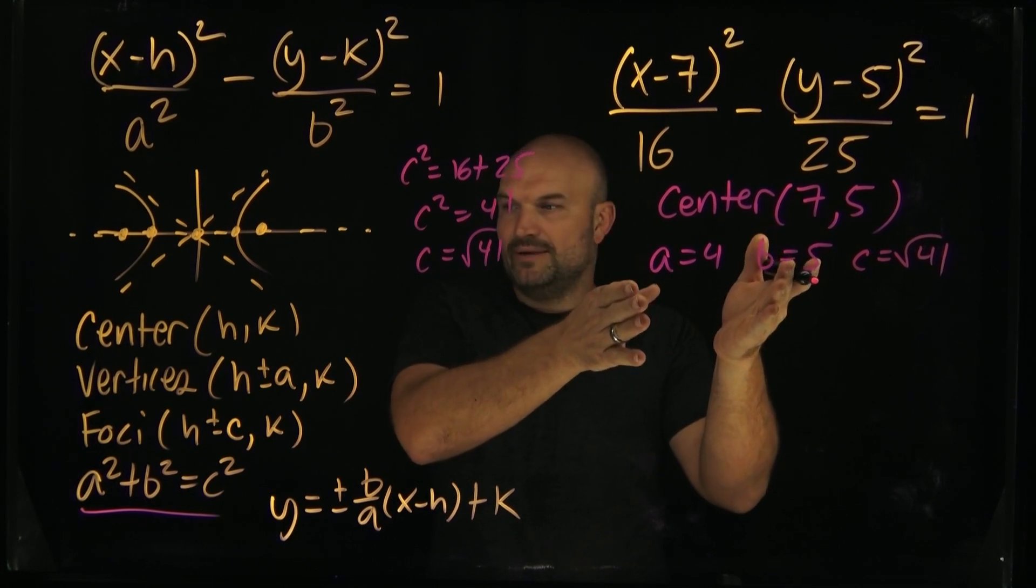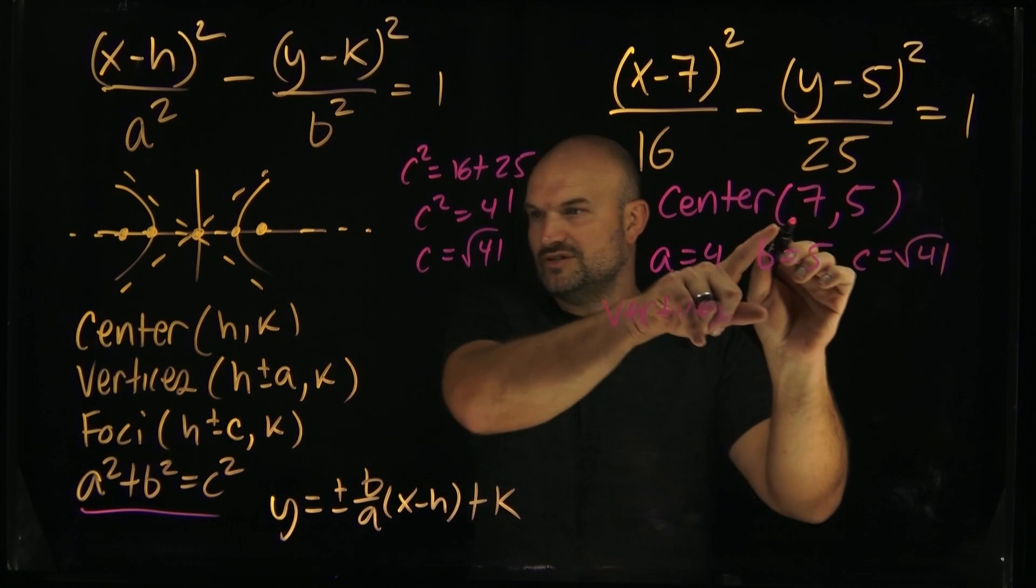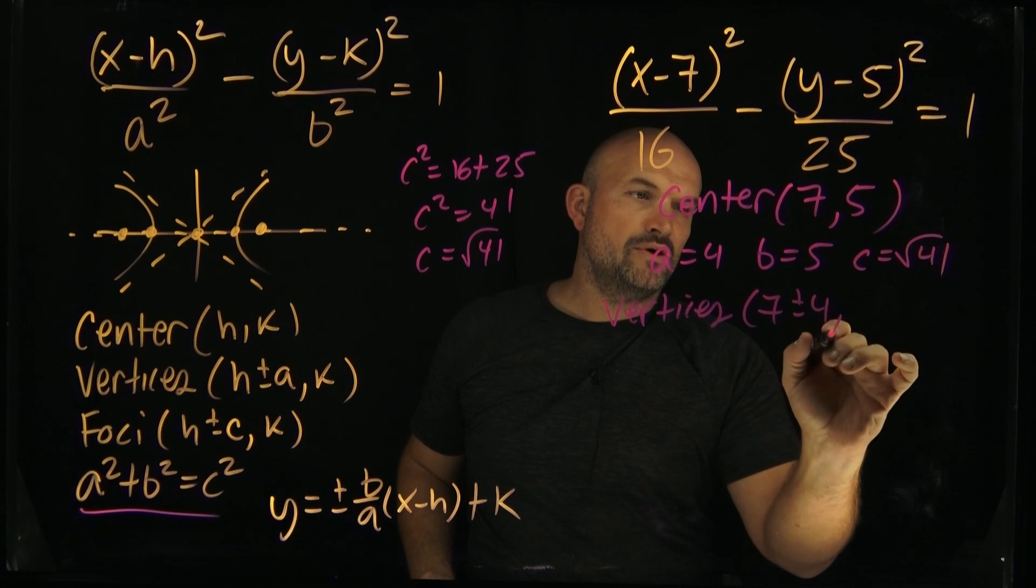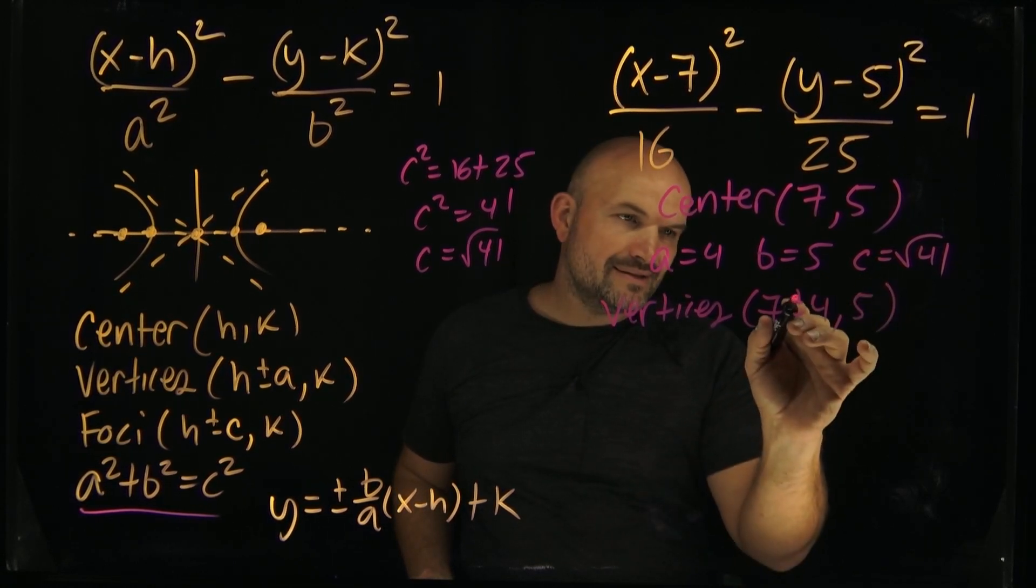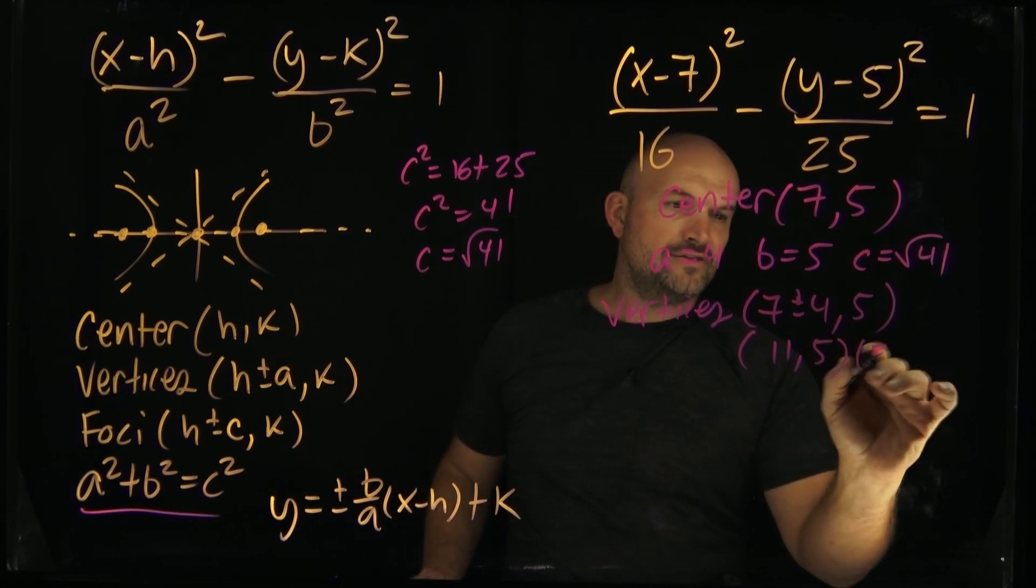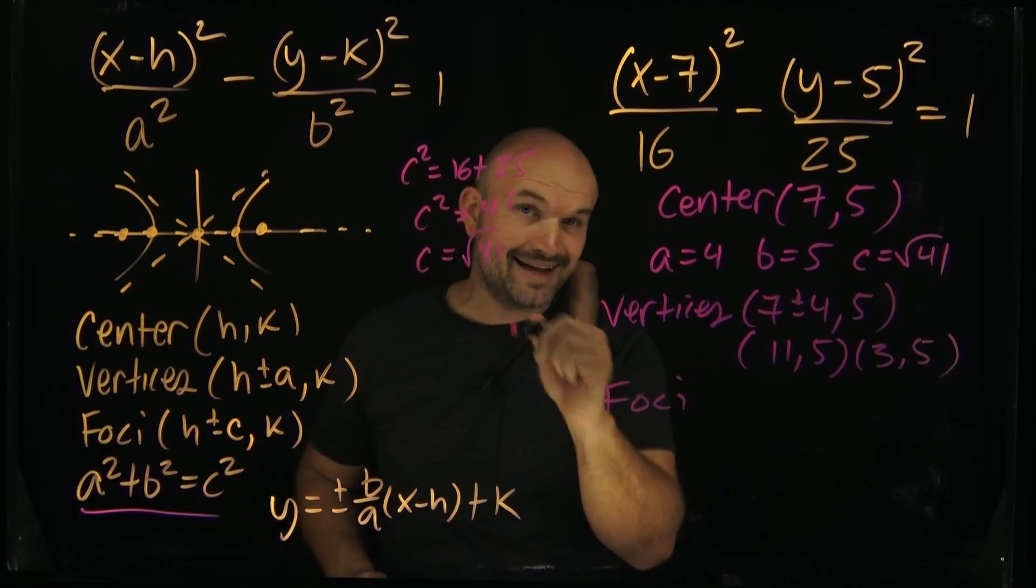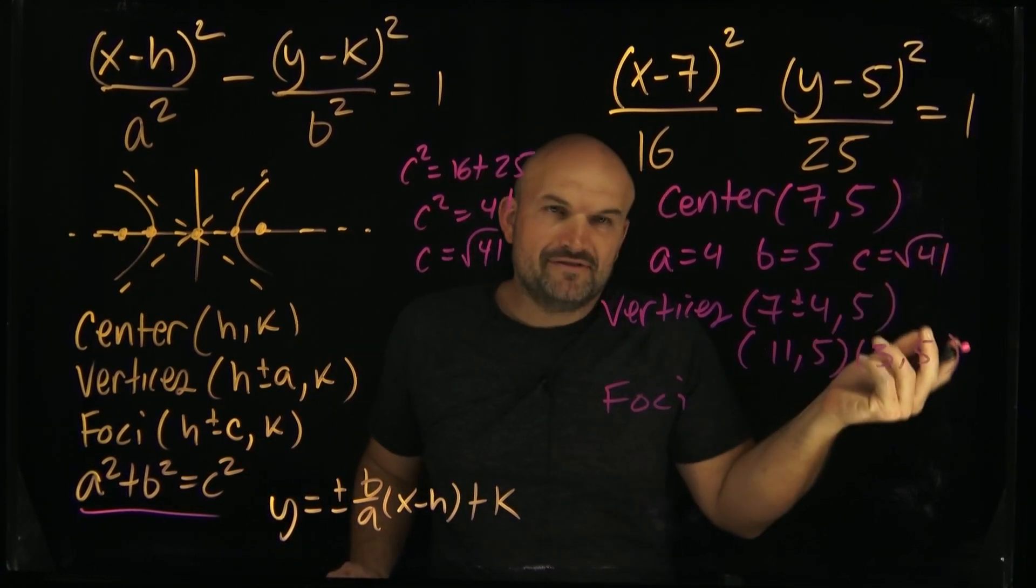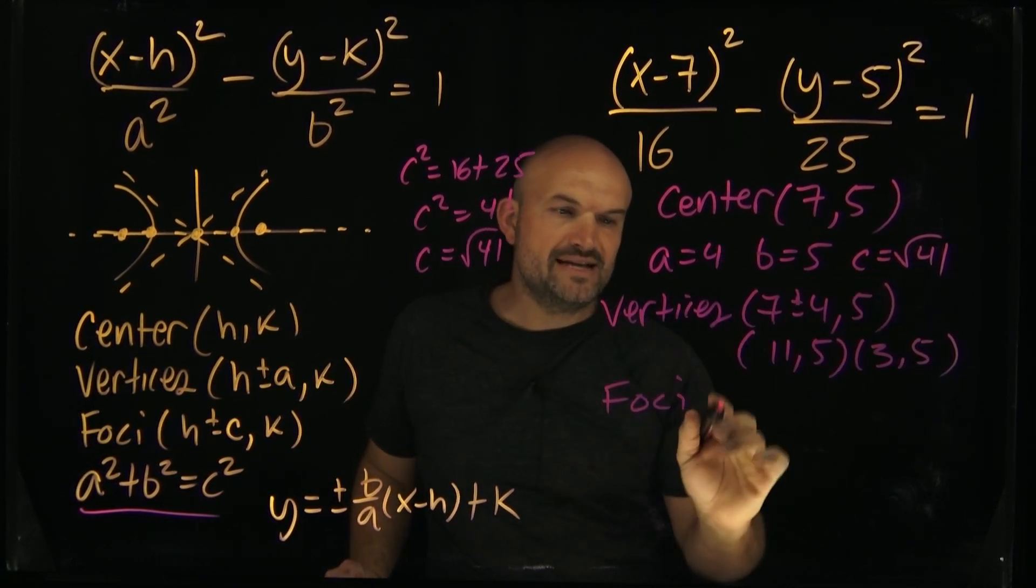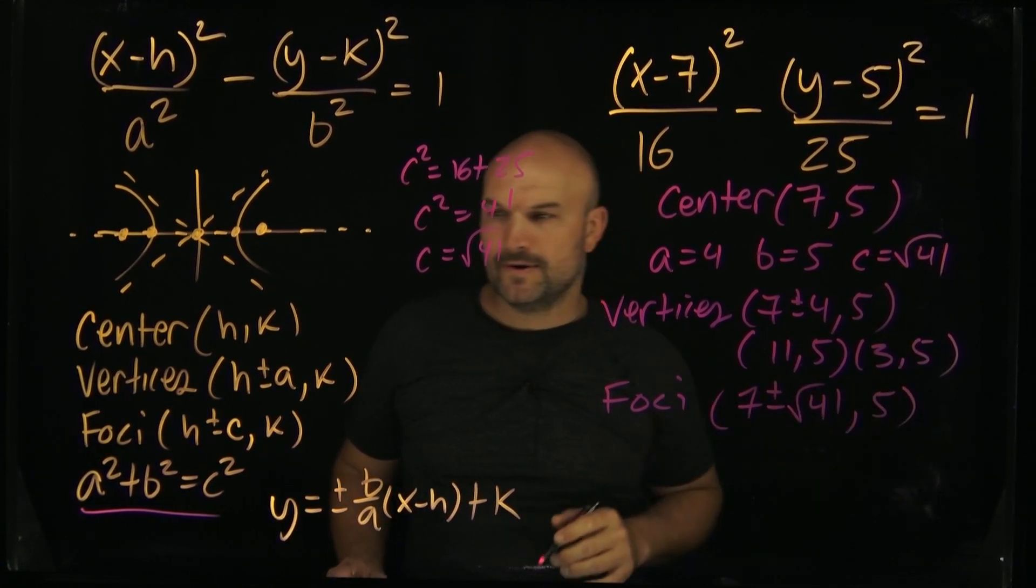We have my center, and if I want to find the vertices, that's easy. So vertices is going to be 7 plus or minus 4 comma 5. We can simplify this for our teacher. That would be 11 comma 5 and 3 comma 5. Then if we want to find the foci, we're going to do the same thing. Now, this one, we're not going to simplify for that teacher, because I have a square root of 41. I can't really add or subtract the square root of 41 without approximating with the 7. So I'm just going to leave that as 7 plus or minus square root of 41 comma 5.